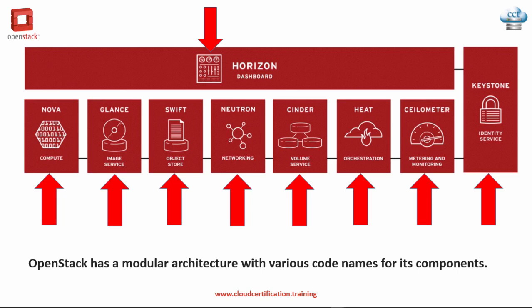The final component is OpenStack Telemetry, called Ceilometer. It provides a single point of contact for billing systems, providing all the counters they need to establish custom billing across all current and future OpenStack components. That's a very important part of building an OpenStack environment if you want to bill people — whether for infrastructure as a service or whatever system you're building — you need to keep track of the bills and who uses what.